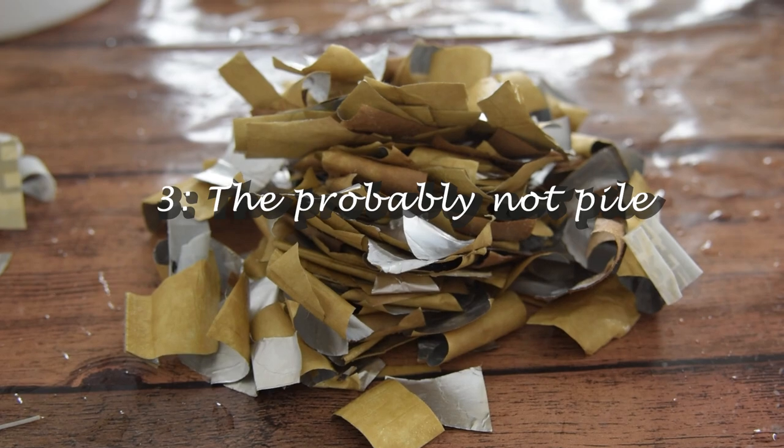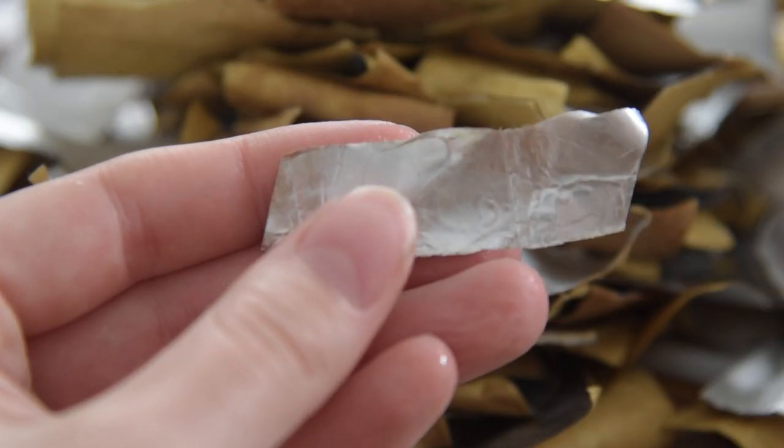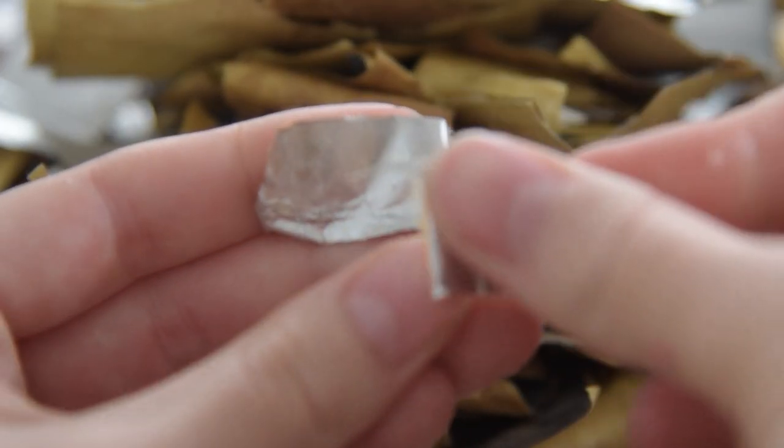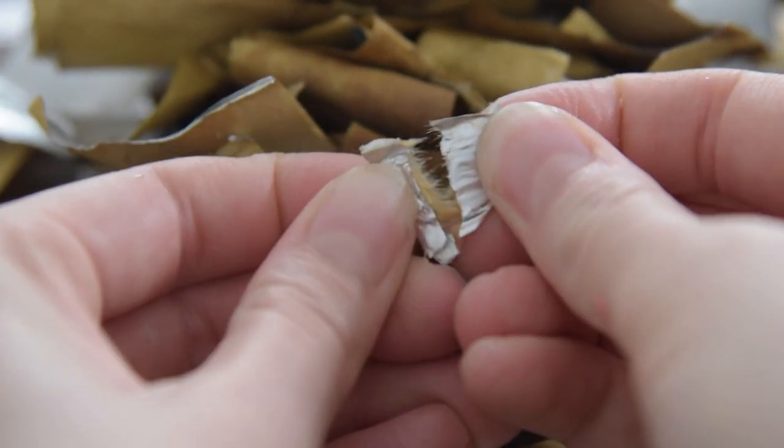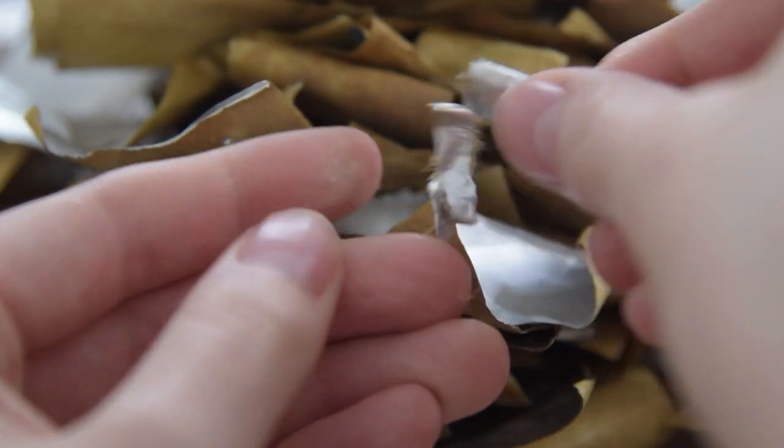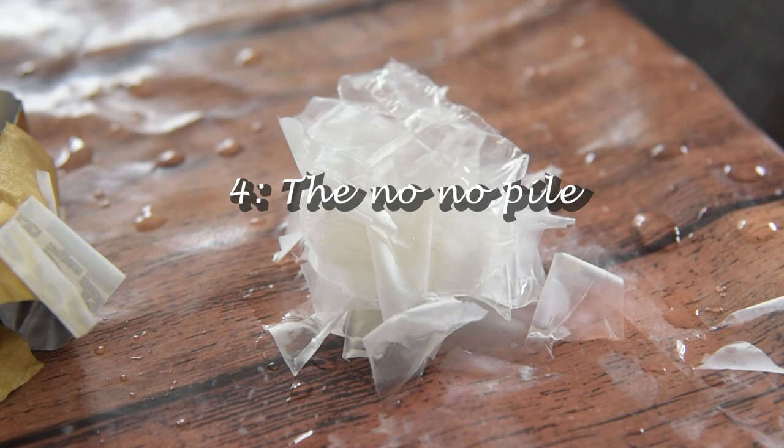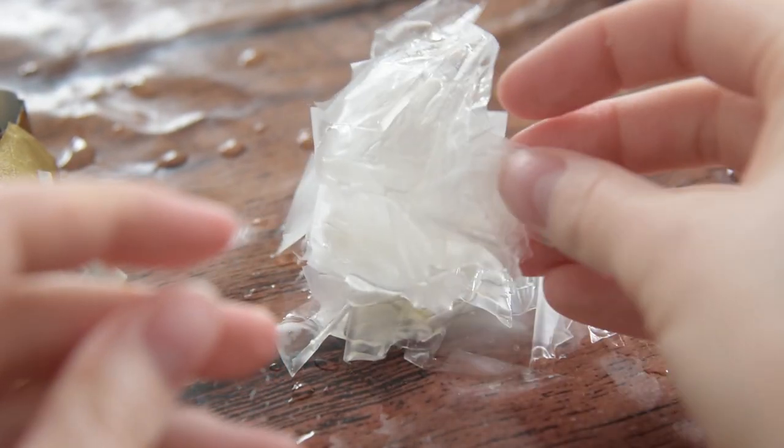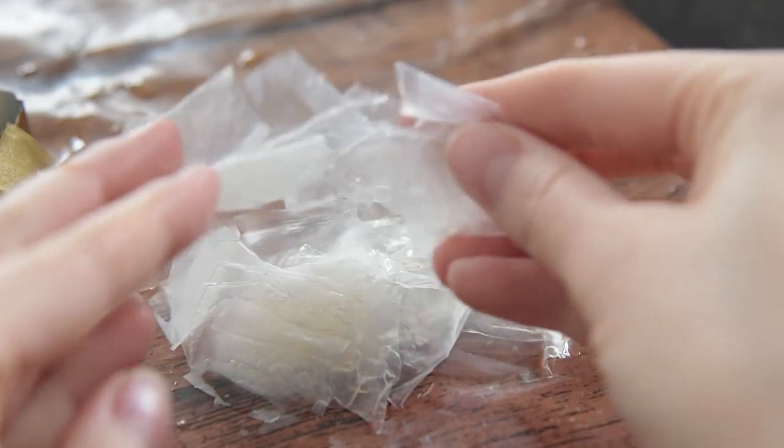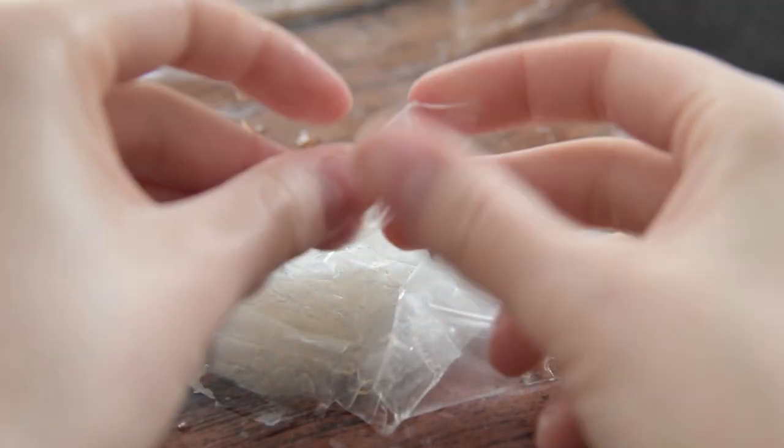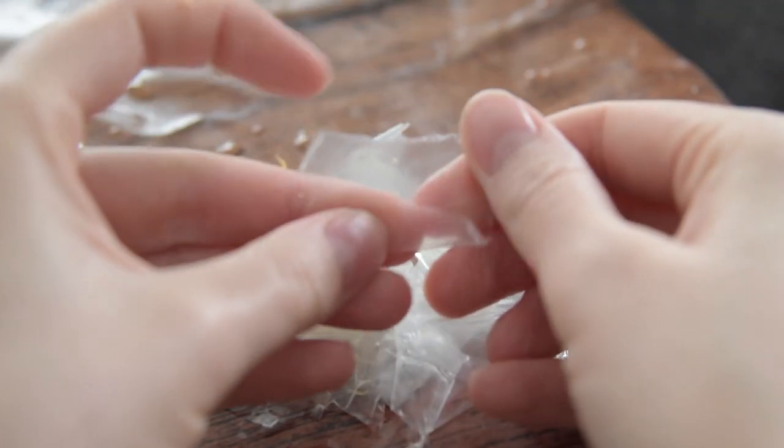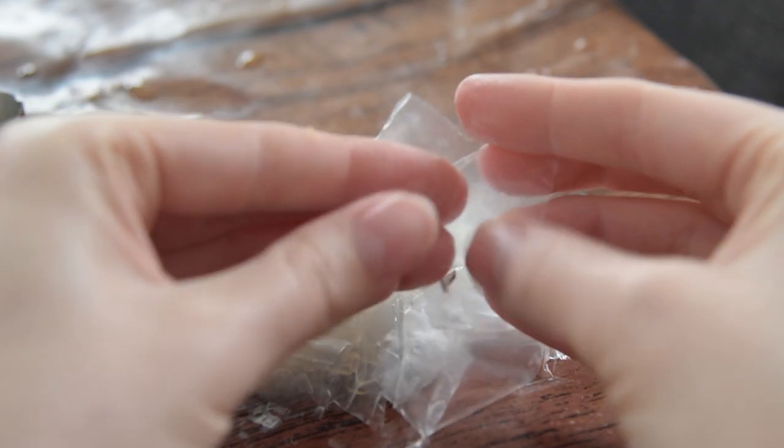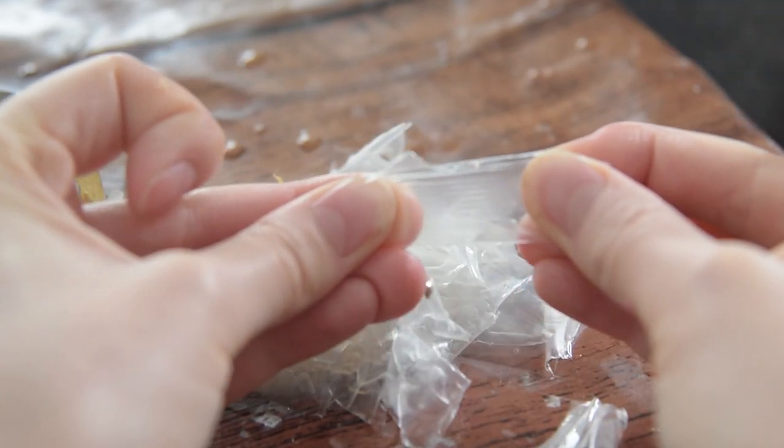Next is pile three, the probably not pile. This is the inside of the carton. It really just looks like aluminum foil. I have very little hope this will break down at all. Lastly, we have pile four, the no-no pile. This is just straight up plastic. Garbage. Get it as far away from your paper as possible. Goodbye to the no-no pile. Now it's time to find out the answer to the very important question, will it pulp?